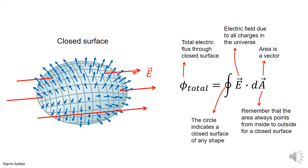In general, this shows that whenever the electric field lines go out of the surface, the contribution to the electric flux is positive; when the electric field lines go into the surface, the contribution to electric flux is negative. The way we write down the electric flux through a closed surface is we put a circle on the integration sign.